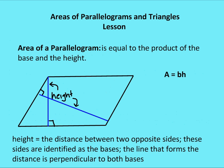So let's talk about the area of a parallelogram. The area of a parallelogram is equal to the product of the base times the height. The base and height are relative to the parallelogram depending on what you choose. Height is going to be the distance between two opposite sides — those sides are identified as the bases — and the line forming that distance is perpendicular to both bases.